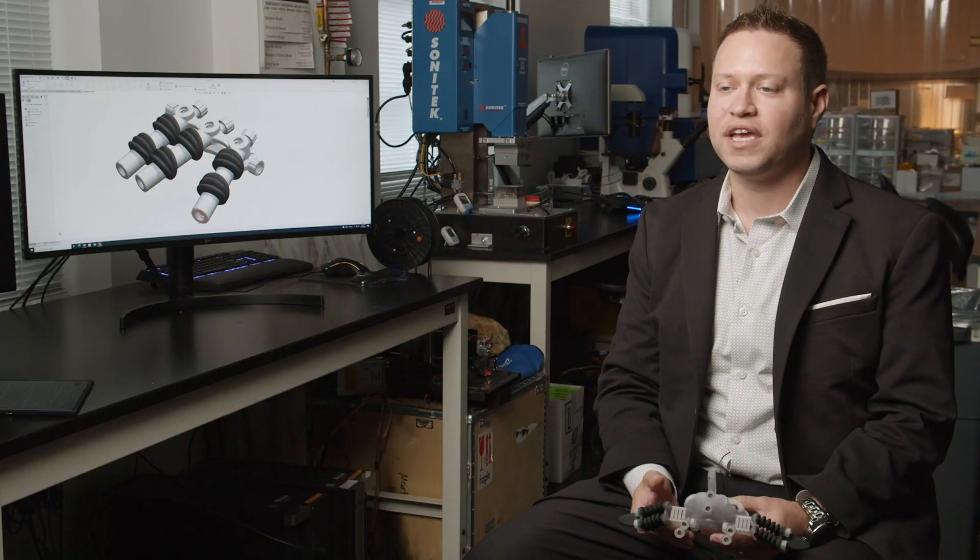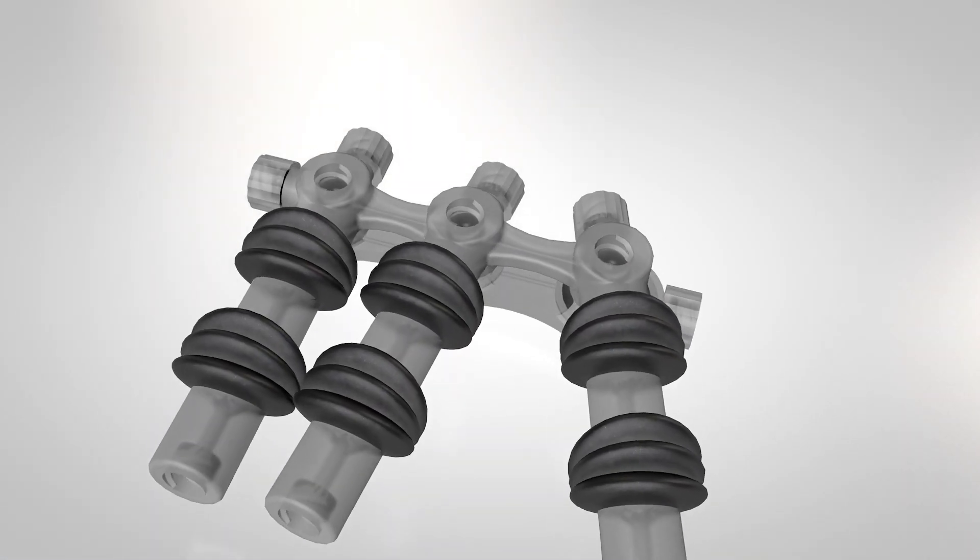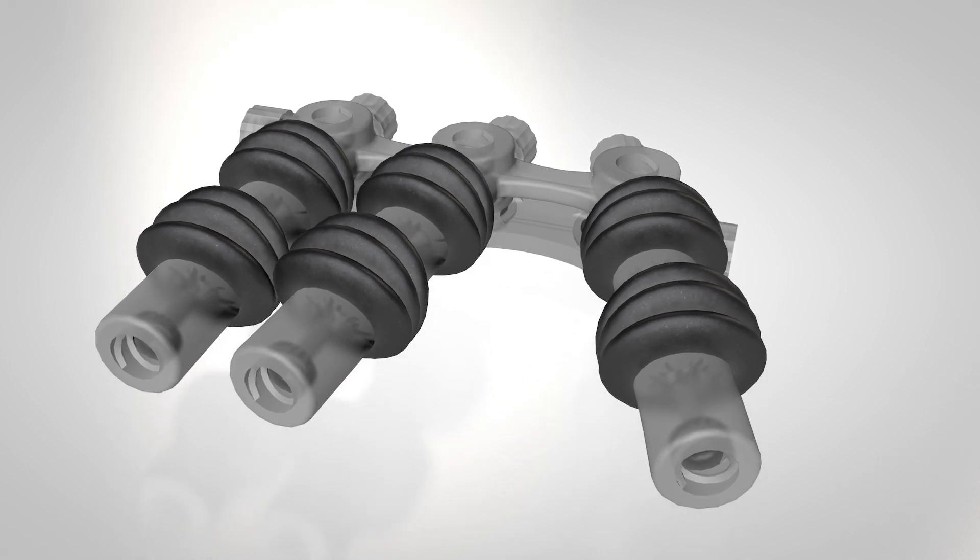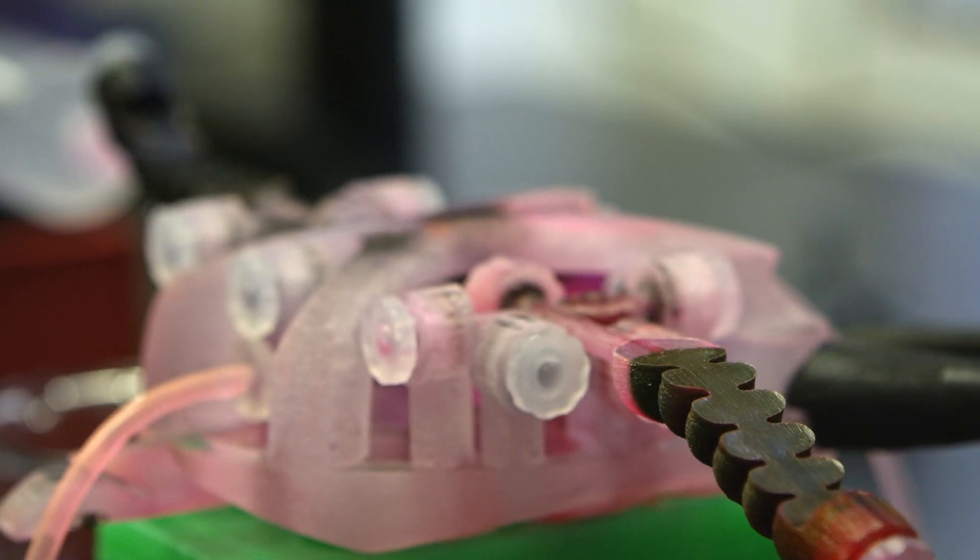Instead of working by using electricity and hard materials, these soft robots use fluids like air or water and they have soft flexible materials that they can use to move or bend or reshape in ways that are essentially impossible to do using conventional robotics.